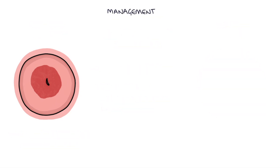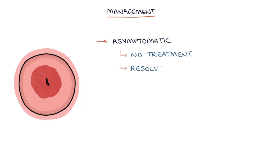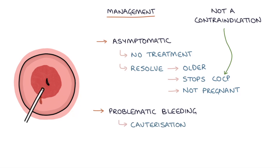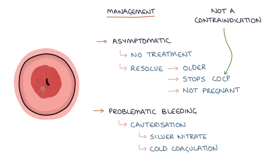Finally, let's talk about management. Asymptomatic ectropions require no treatment. Ectropion will typically resolve as the patient gets older, stops taking the combined pill, or is no longer pregnant. Having a cervical ectropion is not a contraindication to starting the combined contraceptive pill. Problematic bleeding is an indication for treatment, which involves cauterization of the ectropion using silver nitrate or cold coagulation during colposcopy.